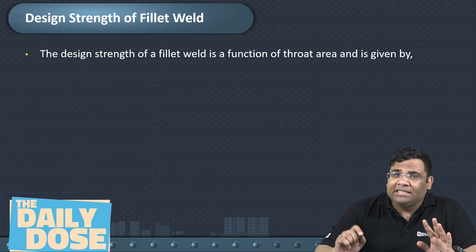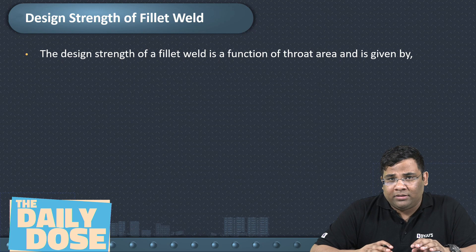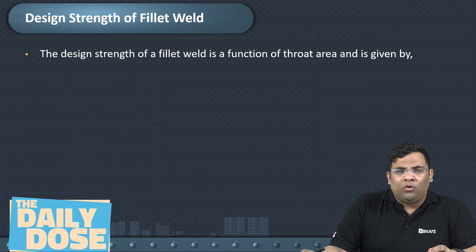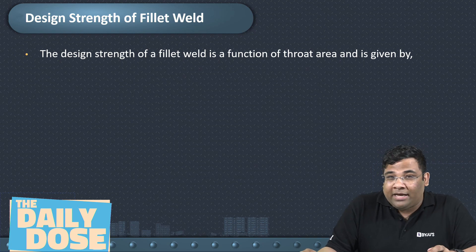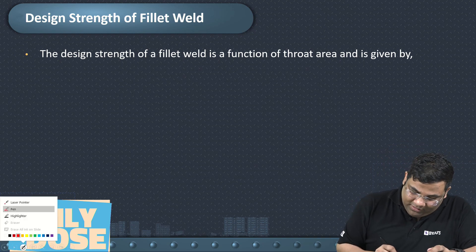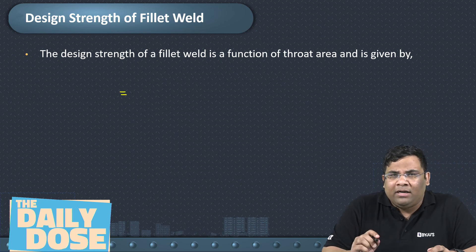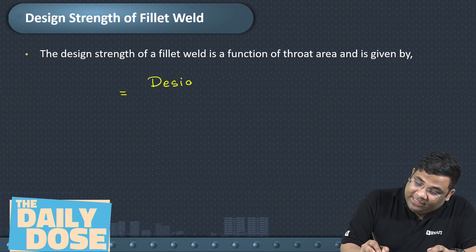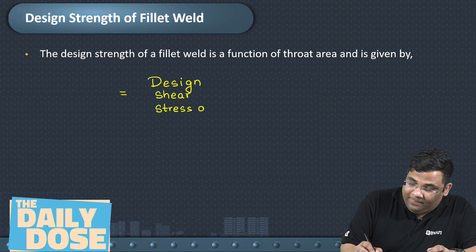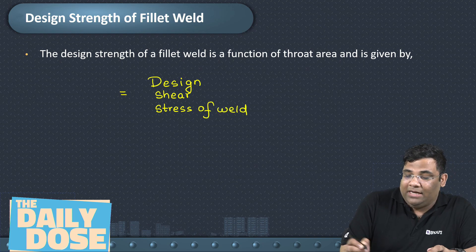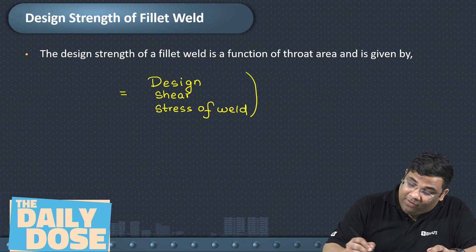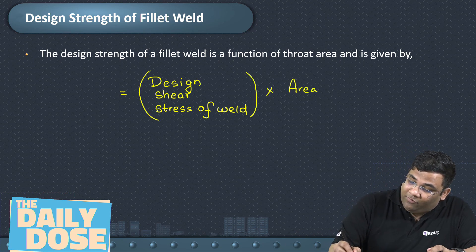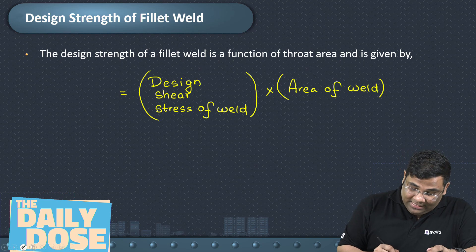The design strength of a fillet weld is the load which the fillet weld can withstand. Load is stress multiplied by area. So the design strength of any fillet weld will be the design shear stress of the weld multiplied by the area of the weld.